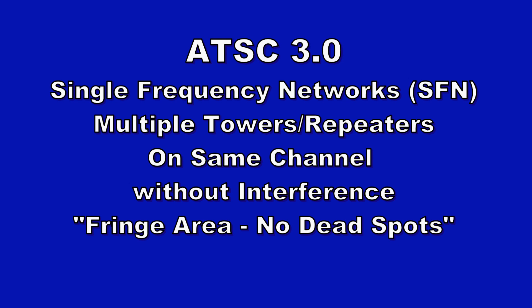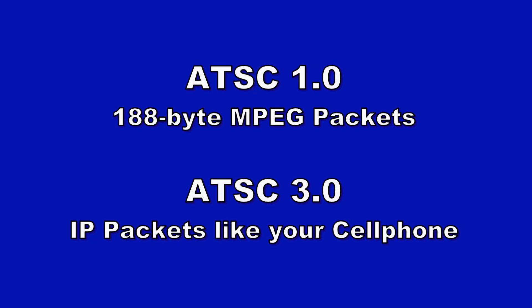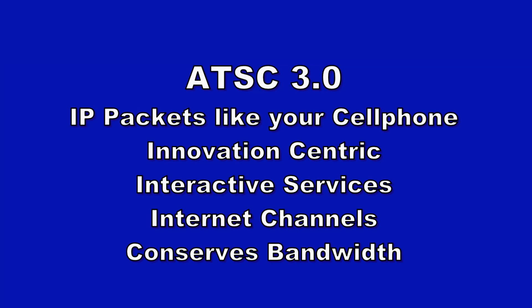ATSC 3.0 is going to get rid of those dead spots we have with ATSC 1.0. ATSC 1.0 had fixed 188-byte MPEG packets, whereas ATSC 3.0 uses IP packets — like your cell phone, like cable. This can allow all types of interactivity, internet channels, and niche broadcasting techniques. We don't even know all the things that 3.0 will bring, but it's a much more flexible standard.